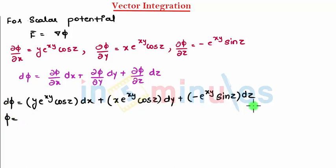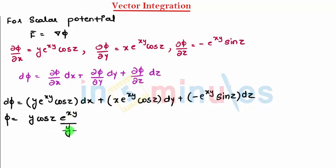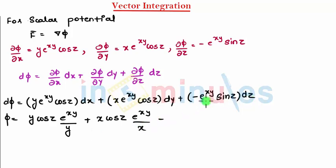Since I need φ, I need to integrate this. Integrating the first term with respect to x: y·cos(z) is constant, so e^(xy) divides by y. For the second term with respect to y: x·cos(z) is constant, e^(xy) divides by x. For the third term with respect to z: e^(xy) is constant and the integration of sin(z) gives -cos(z), so this becomes +cos(z).